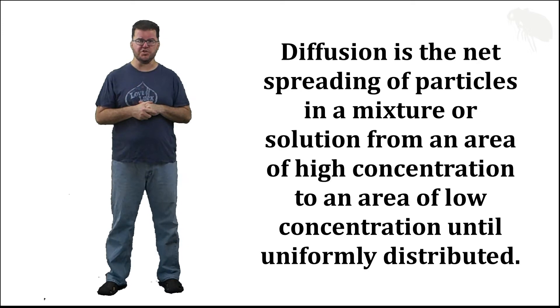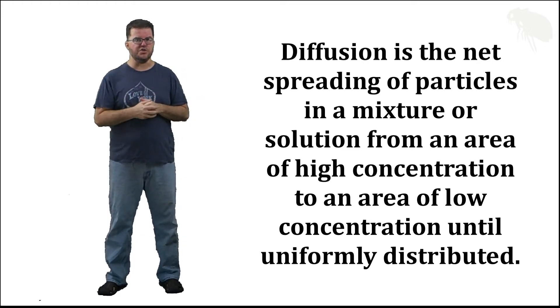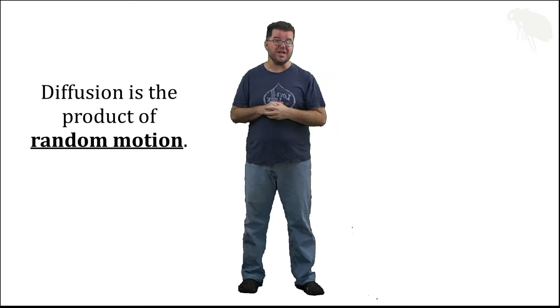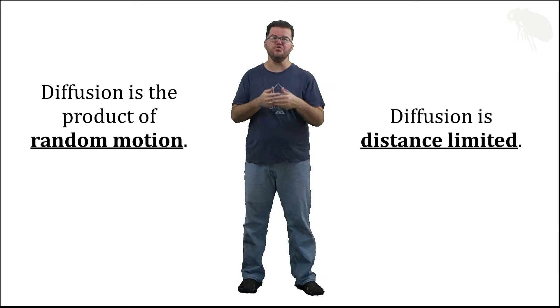You know, the whole thing that diffusion is the net spreading of particles in a mixture or solution from an area of high concentration to low concentration until uniformly distributed. I'll try not to say it too many more times, but students who've had my classes before know I drill on this because it's fundamental to so many things in biology. Having said that, what I really want to focus on in this video is two ideas: one is that diffusion is the product of random motion, and two, diffusion is distance limited.